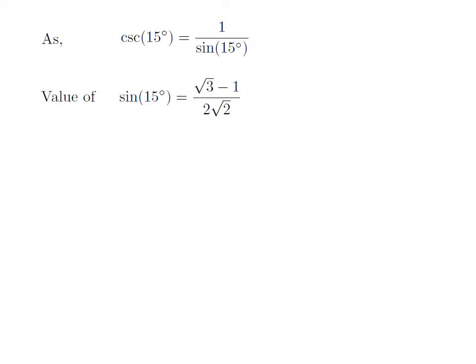To find the value of cosecant of 15 degrees, we have to find the value of sine of 15 degrees. How to find the value of sine of 15 degrees has been explained in the video appearing in the upper right corner. The URL of the video has been mentioned in the description section. Following the steps given in the mentioned video gives us the value of sine of 15 degrees is equal to square root of 3 minus 1, upon 2 into square root of 2.